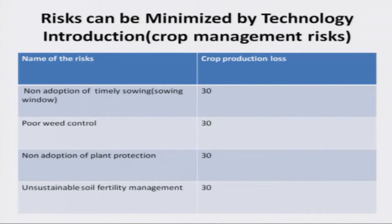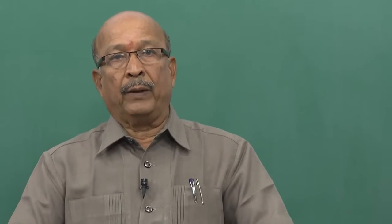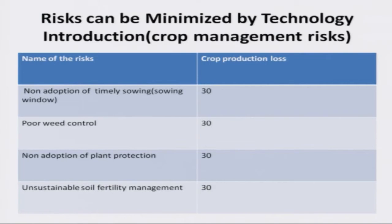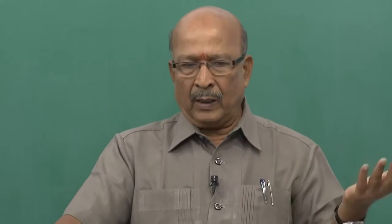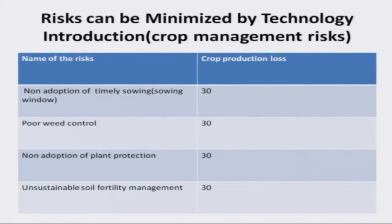The third category is crop management risk — risk that can be minimized by technology introduction. Non-adoption of timely sowing carries 30% crop protection loss; for example, wheat in India should be sown by November, and sowing in December affects yield due to weather. Poor weed control carries 30% yield loss. Non-adoption of plant protection also carries about 30% crop protection loss. Unsustainable soil fertility management — not applying balanced or recommended fertilizer — carries a crop protection loss of 30%.